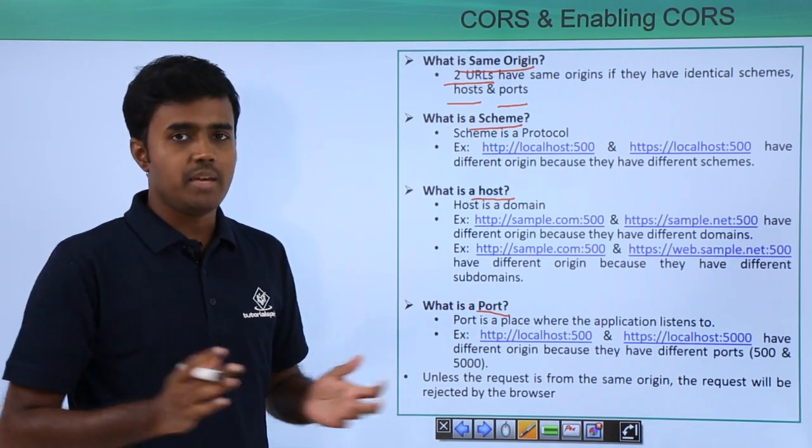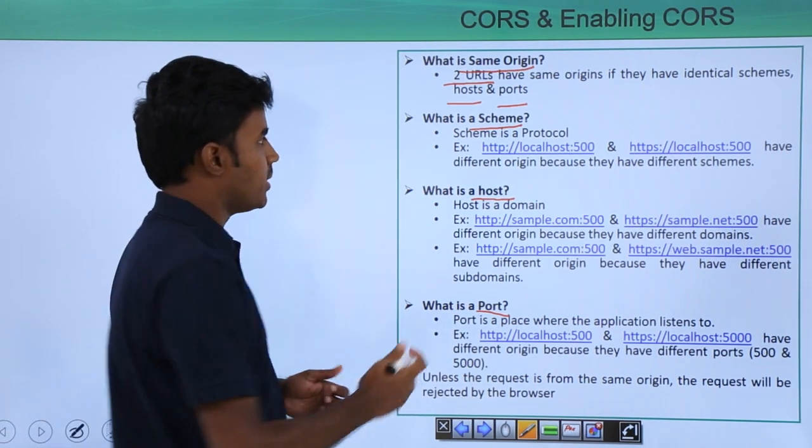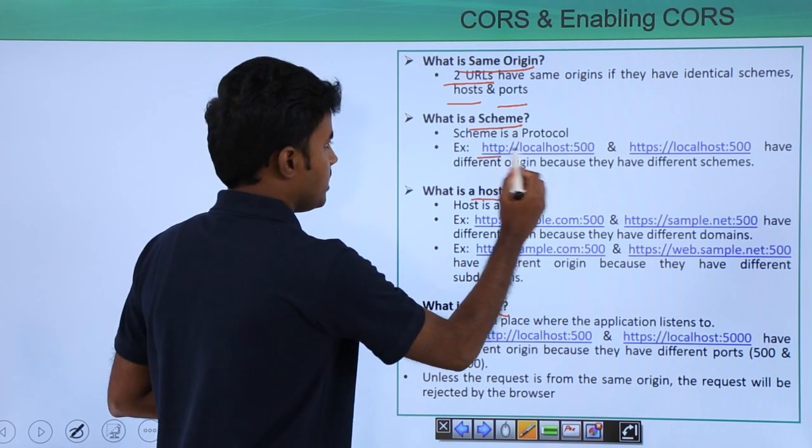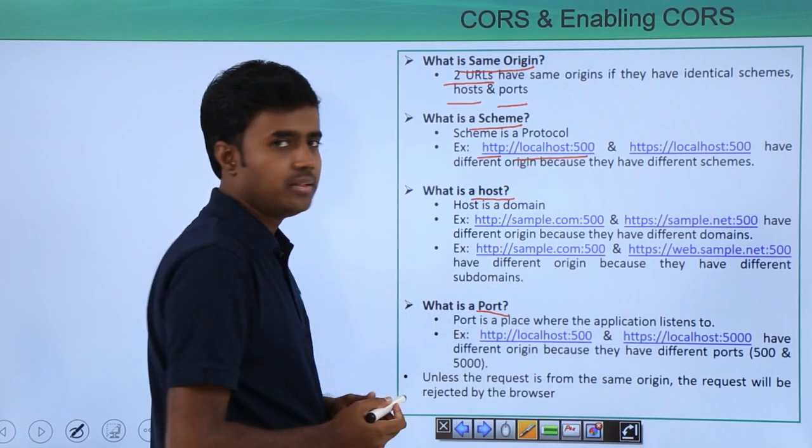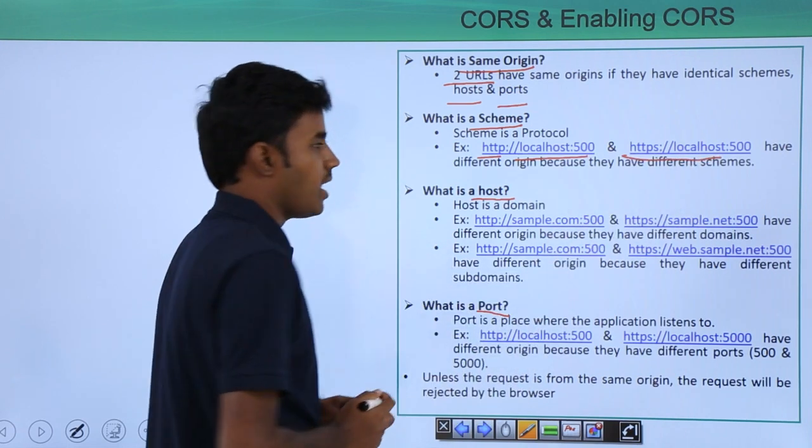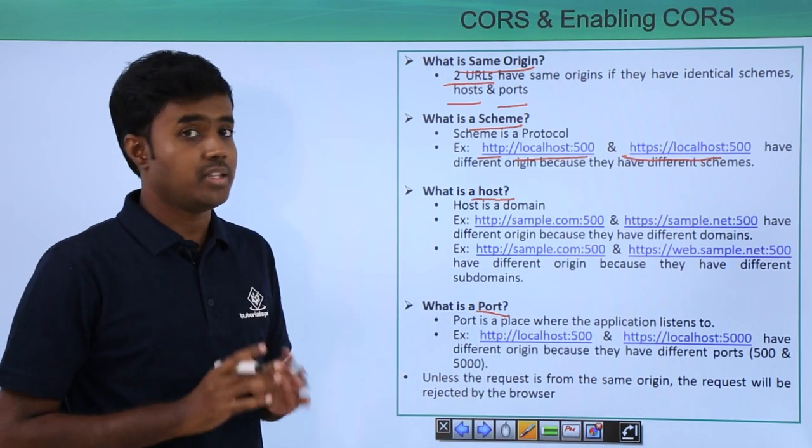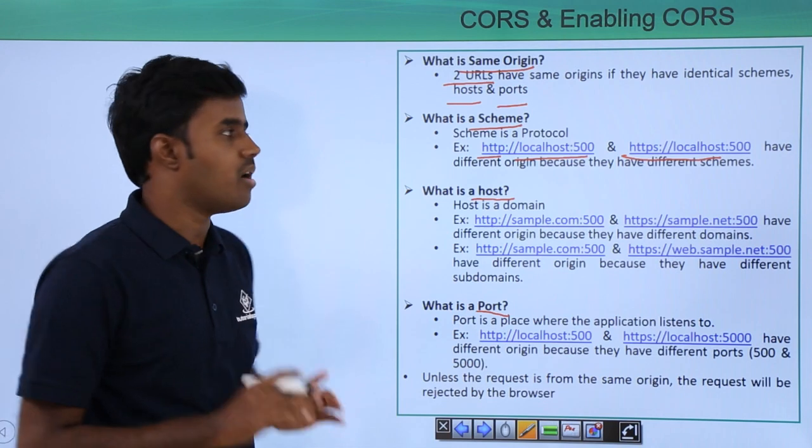What is a scheme? A scheme is nothing but a protocol. For example, HTTP localhost 500 and HTTPS localhost 500 have different origin and they do not belong to same origin because they have different protocols or different schemes.